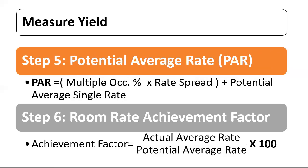Step five: Potential Average Rate (PAR) — a collective statistic that combines the potential average single rate with the multiple occupancy percentage and rate spread. Formula: PAR equals multiple occupancy percentage multiplied by rate spread, plus potential average single rate. Step six: Room Rate Achievement Factor — the percentage of the rack rate that the hotel actually receives. It can be calculated as actual average rate upon potential average rate, multiplied by 100, giving the achievement factor percentage.